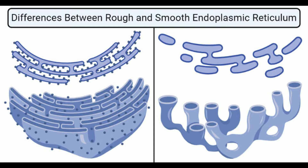Rough ER also plays a significant role in quality control during the folding of proteins, where the ratio of sheets to tubules is changed when the quantity of unfolded proteins increases in the cell. Sometimes, apoptosis is initiated in the cell as a result of the increase in the content of unfolded proteins. Similarly, rough ER also contains multiple enzymes involved in RNA metabolism that function to bind and modify.